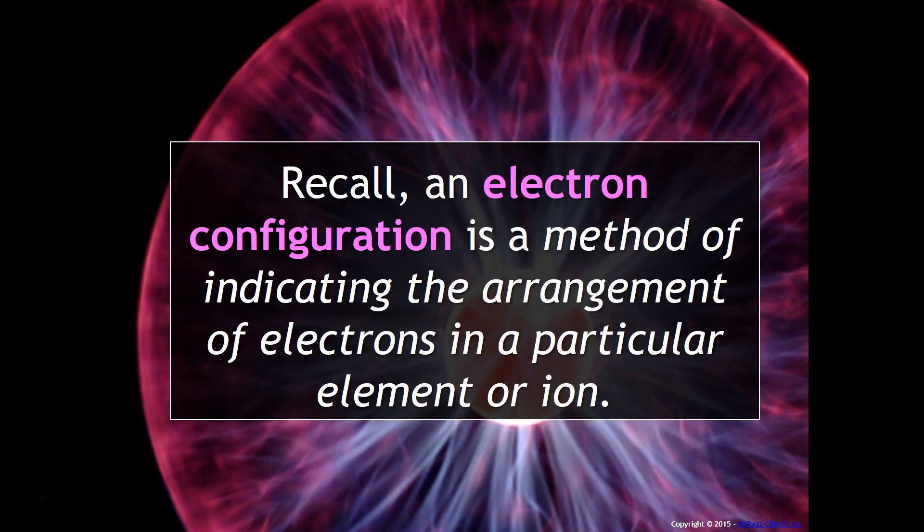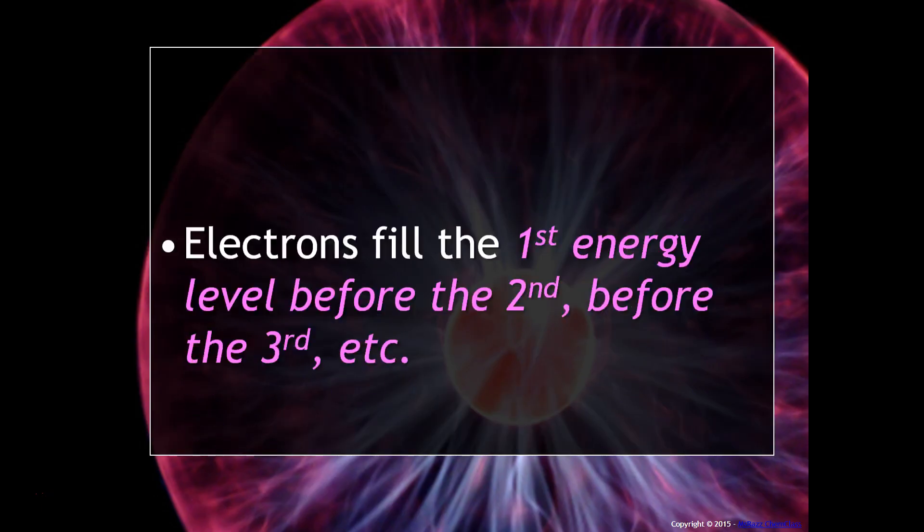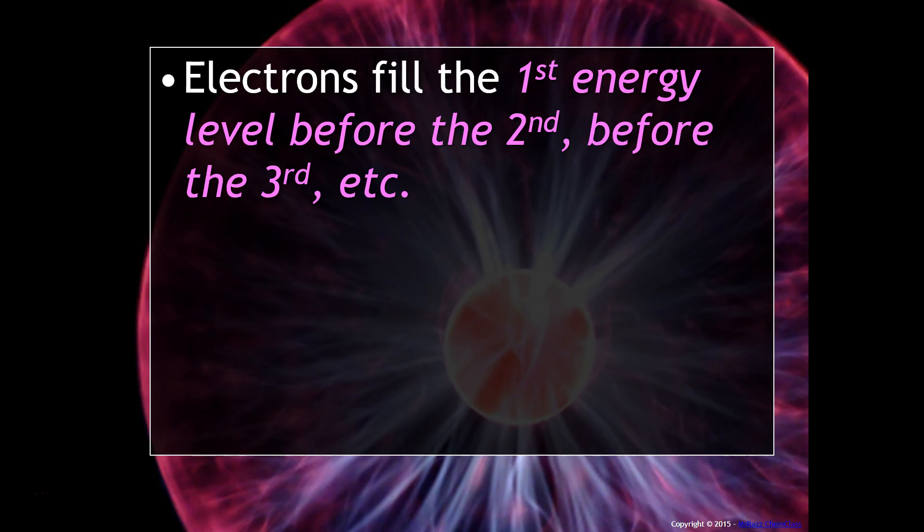Recall, an electron configuration is a method of indicating the arrangement of electrons in a particular element or ion. Electrons will fill the first energy level before the second, before the third, etc.